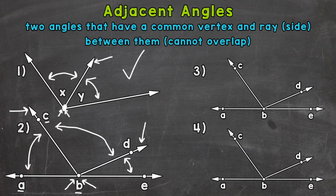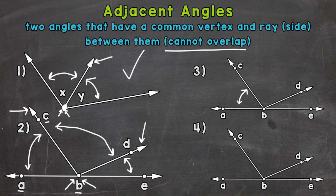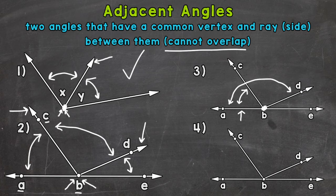Let's move on to numbers three and four, where we'll go through examples of angles that are not considered adjacent. For number three, we're going to talk about the 'cannot overlap' part of the definition. We'll start with angle ABC — this angle right here — and then look at angle ABD. Those two angles do share a vertex and they do share a side, but they do overlap. Angle ABD overlaps ABC. Adjacent angles need to be next to each other, not on top of each other, so those two angles would not be considered adjacent because they overlap.